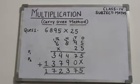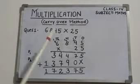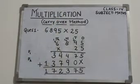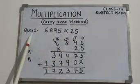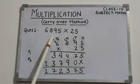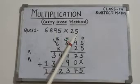Hello students, today we are going to study multiplication part 2, carry over method. Here is your question: 6,895 multiply by 25.